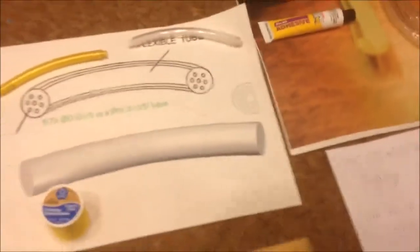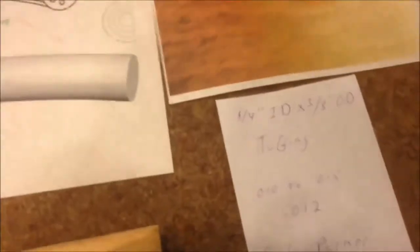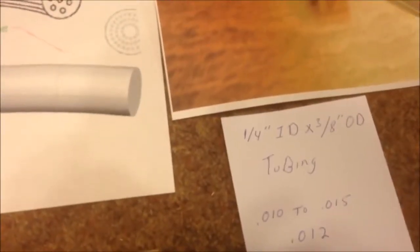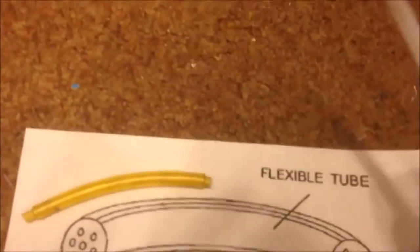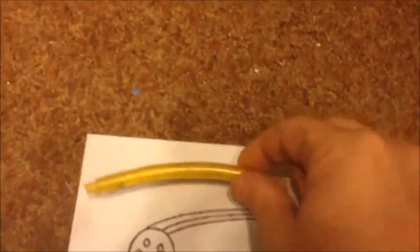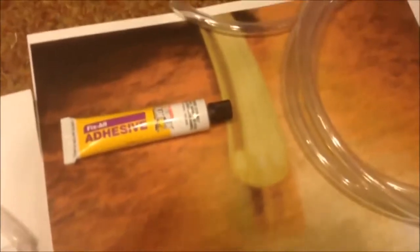The tubing is simple tubing. This is all it is. And it is 1 quarter ID and 3 eighths OD type tubing. Now, there's two different types. There's the clear type, or I bought the special yellow type, because it's exactly like Stan Myers had made.